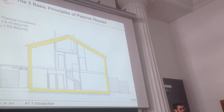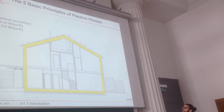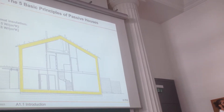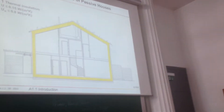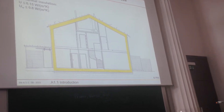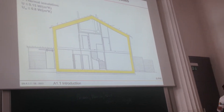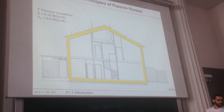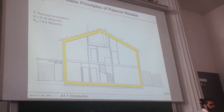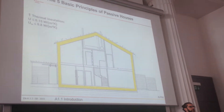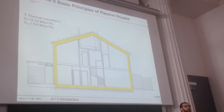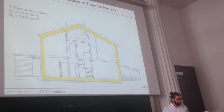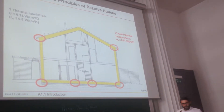Thermal envelope. We've heard already about the U-values. When we're talking about passive house standards for moderate climate zones, the U-value should be around 0.1 or 0.15 W/m²K. How many of you have already calculated U-values? That's good.